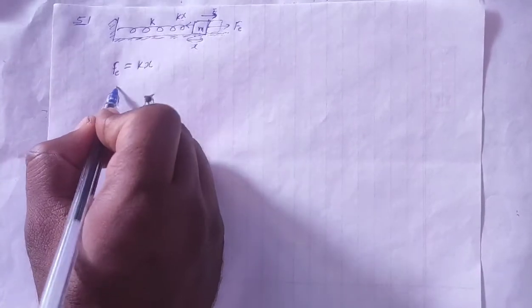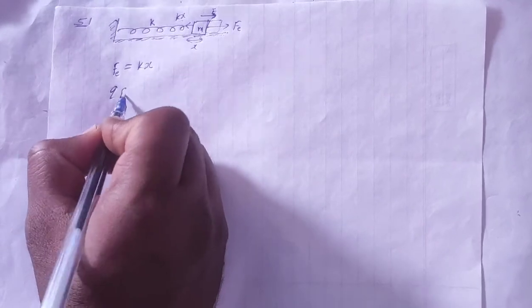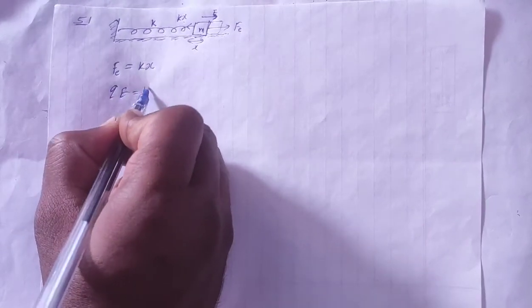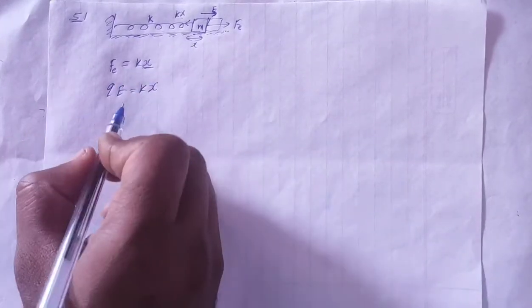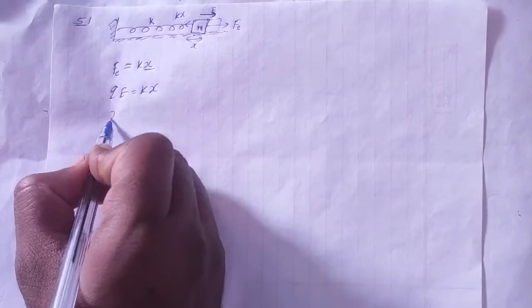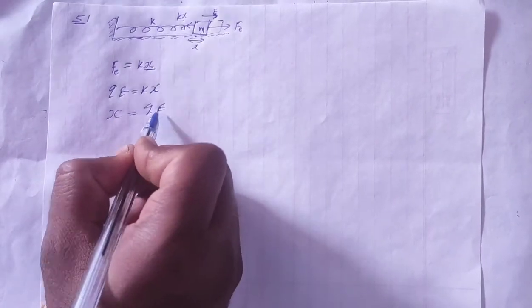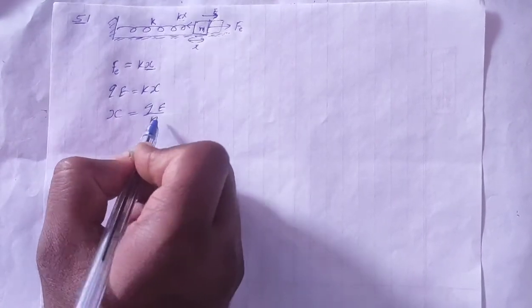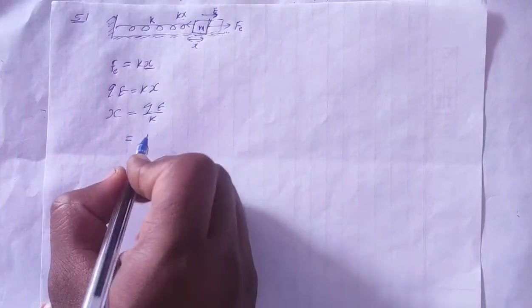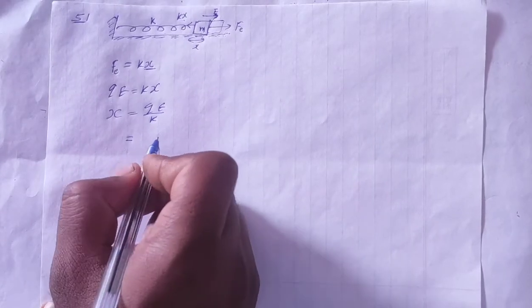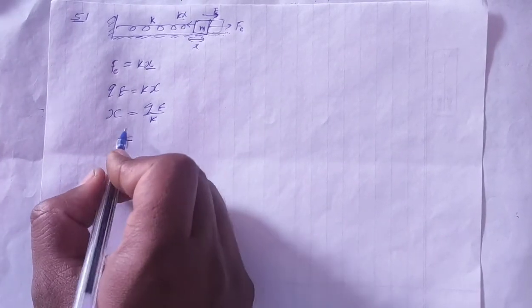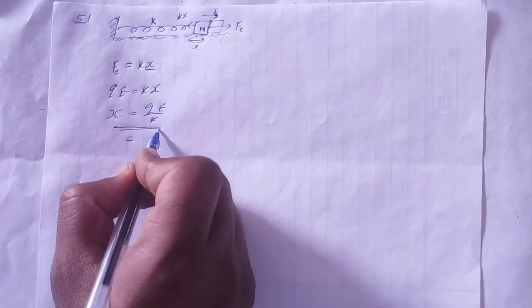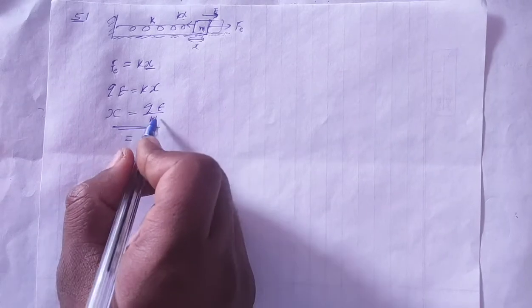The electrostatic force qE equals the spring force kx, where x is the amplitude of SHM. Solving: x equals qE divided by k. Therefore, the amplitude of the resulting SHM is qE over k, which equals 2qE by k... the amplitude is qE/k.